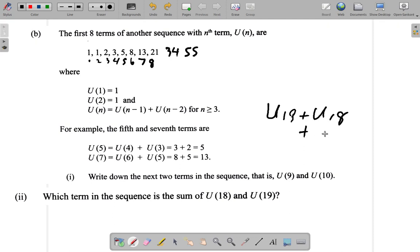18 is what? Plus 2. 18 is 20 plus minus 2, I mean. 18 is what? Minus 2. It is 20 minus 2. So this is U(20 minus 2).